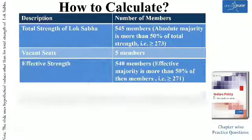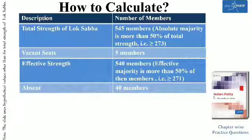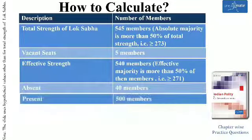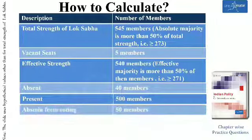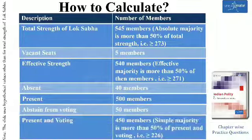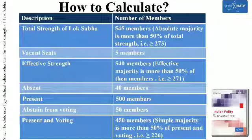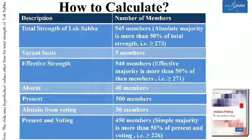Suppose further 40 members are absent. The members present are 500. The members which abstain from voting are 50. Thus the members present and voting are 450. The simple majority is more than 50% of the members present and voting. Thus in our example it is 226 or more.